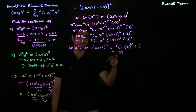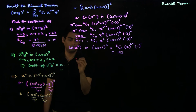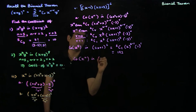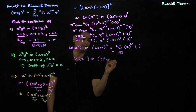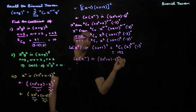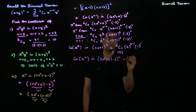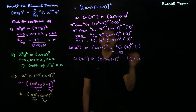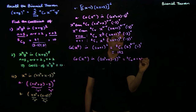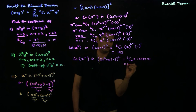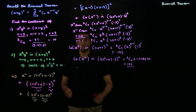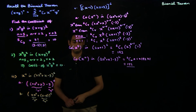Plugging back in, the coefficient of x^11 in (2x² + x − 3)^6 is 6C0 · 1 · 192 · 1 = 192. This is the result we seek, obtained via the first approach.